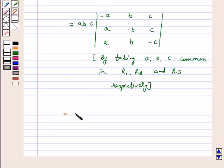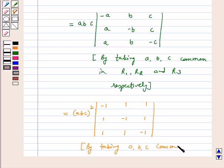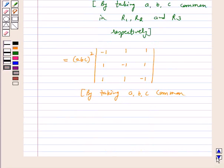Which is equal to abc square times the determinant with minus 1, 1, 1; 1, minus 1, 1; 1, 1, minus 1. By taking a, b, c common in c1, c2, and c3 respectively.